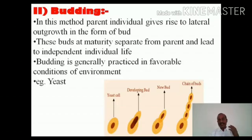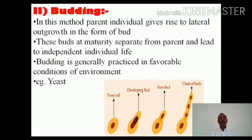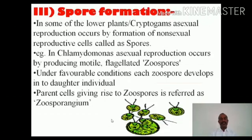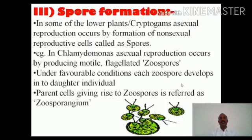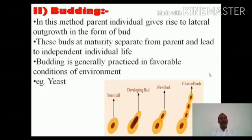The second method is budding. In this method, a parent individual may give rise to a lateral outgrowth in the form of a bud from the outer surface of the body. These buds, at maturity, separate from their parent and lead an independent life, giving rise to new individuals. Budding is practiced in favorable environmental conditions, particularly when food and resources are amply available. The most common example of budding is in yeast.